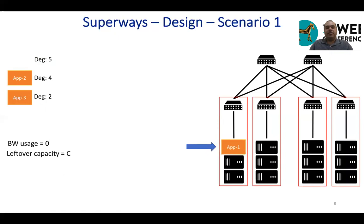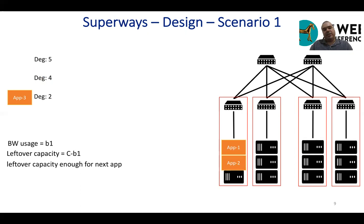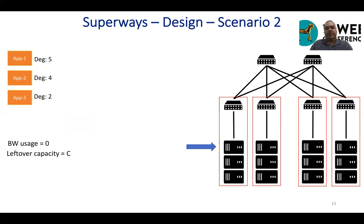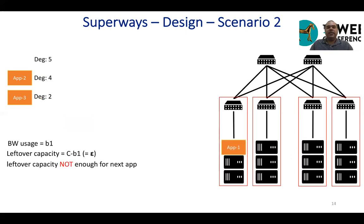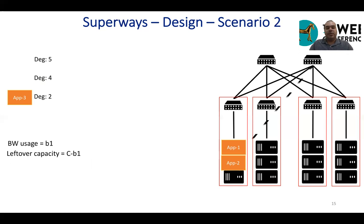We place the first in-cast aggregator on the server and the leftover capacity updates to C minus B1. If the leftover capacity is enough, we place the next in-cast application on the server, updating capacity again. If we still have enough capacity, we place the third application and update accordingly. But if the scenario is different — if after placing the first aggregator the leftover capacity is too small for the next one — we place that next in-cast application on the server but add one extra link connected to the top-of-rack switch. Now the leftover capacity updates to 2C minus B1 minus B2.